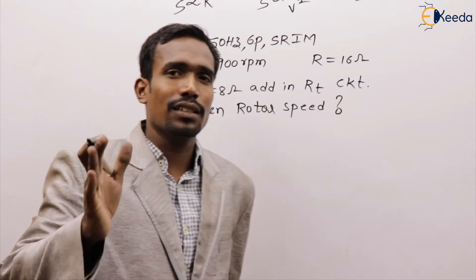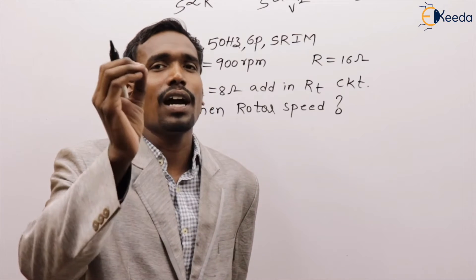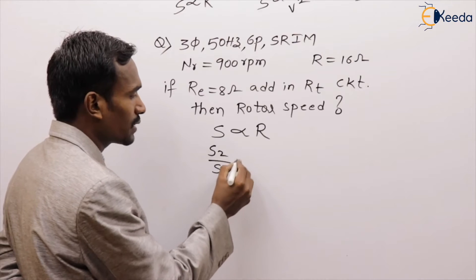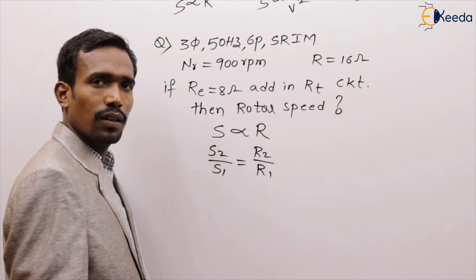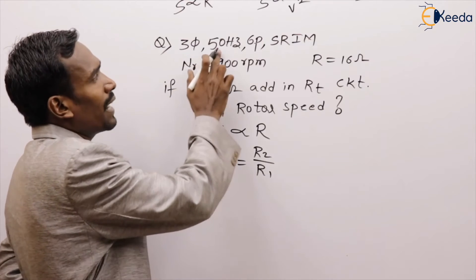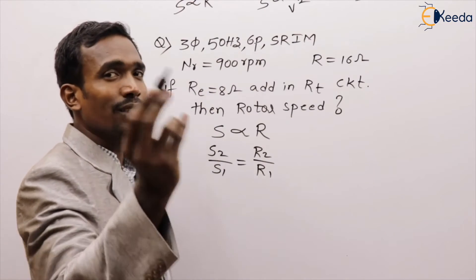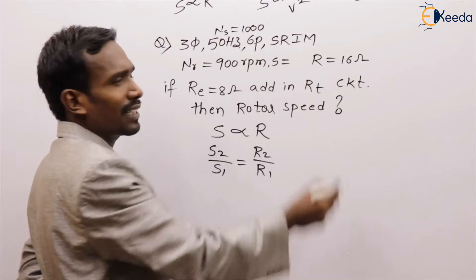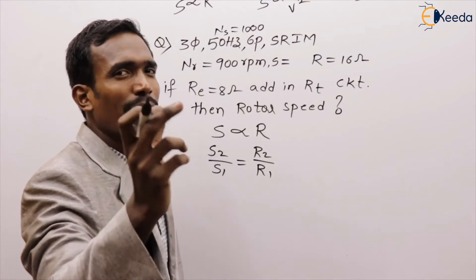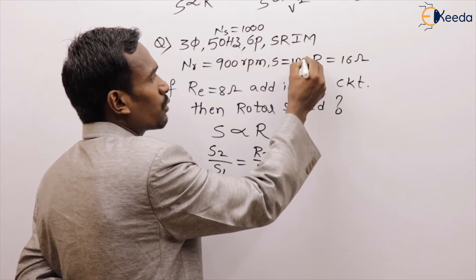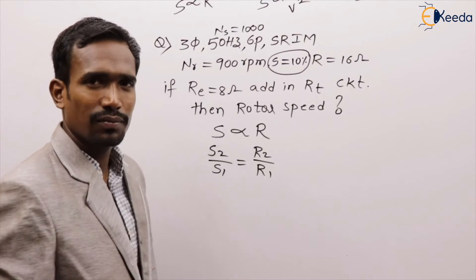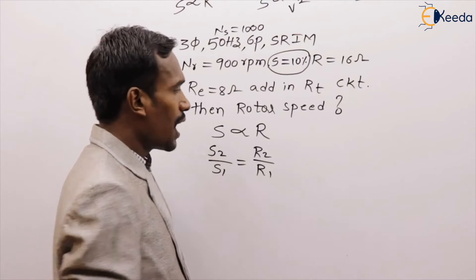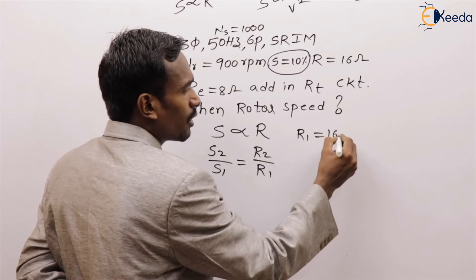There is no direct relation between speed and rotor resistance, but we have the relation: slip is directly proportional to rotor resistance, meaning s2 by s1 equals R2 by R1. For a six-pole, 50 Hz machine, the synchronous speed Ns equals 1000 rpm. Since the rotor is rotating at 900 rpm, slip s1 is 10 percent.